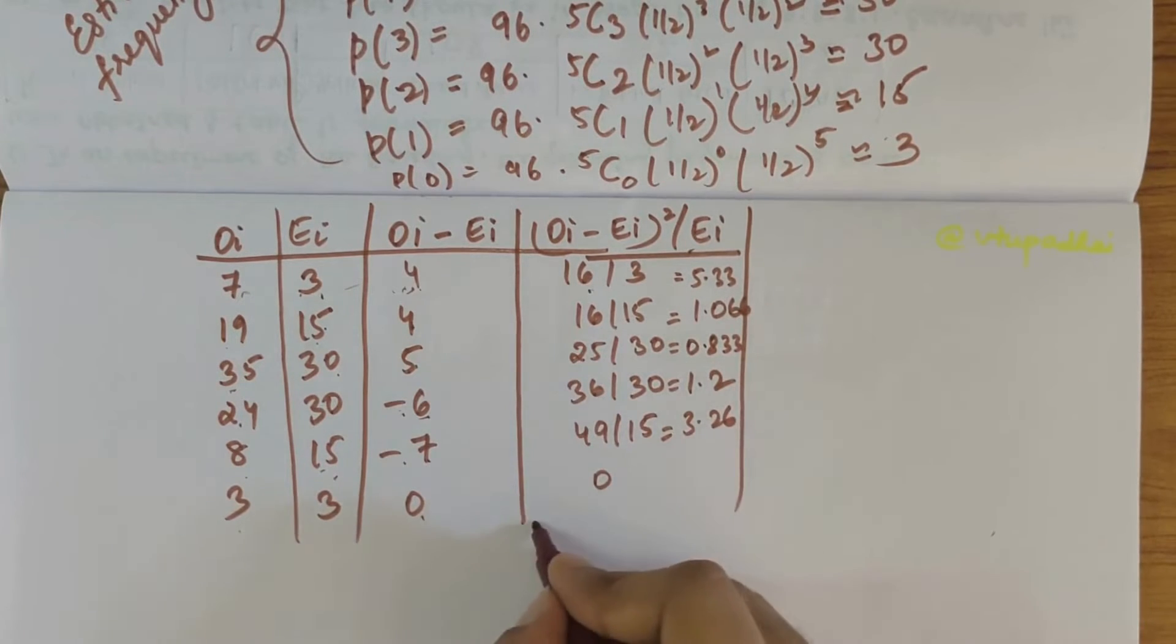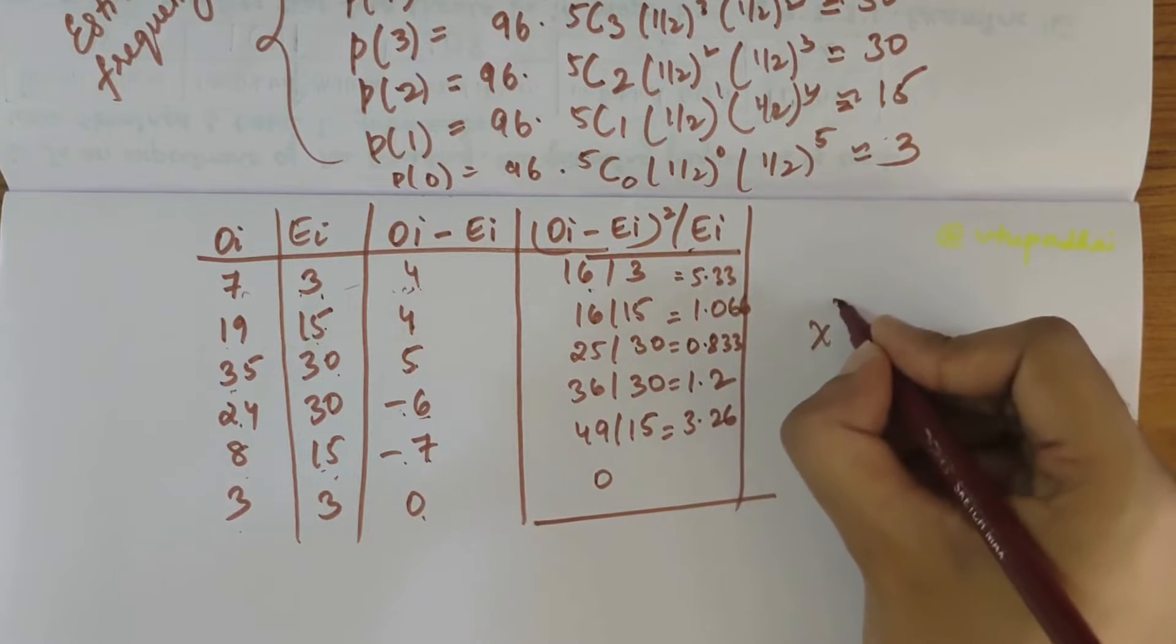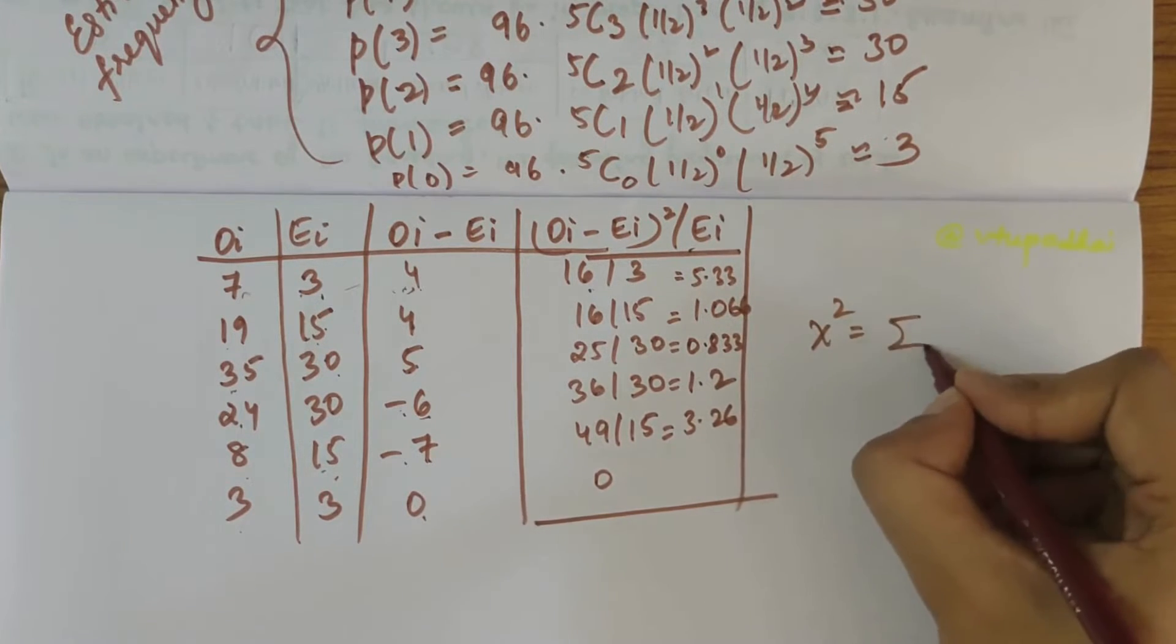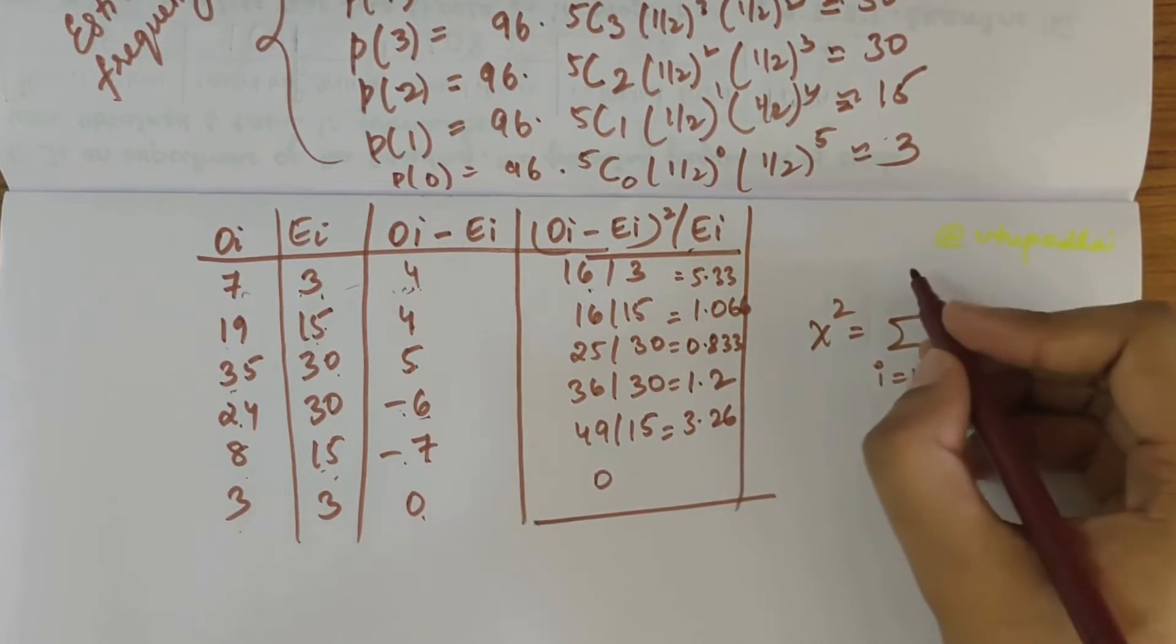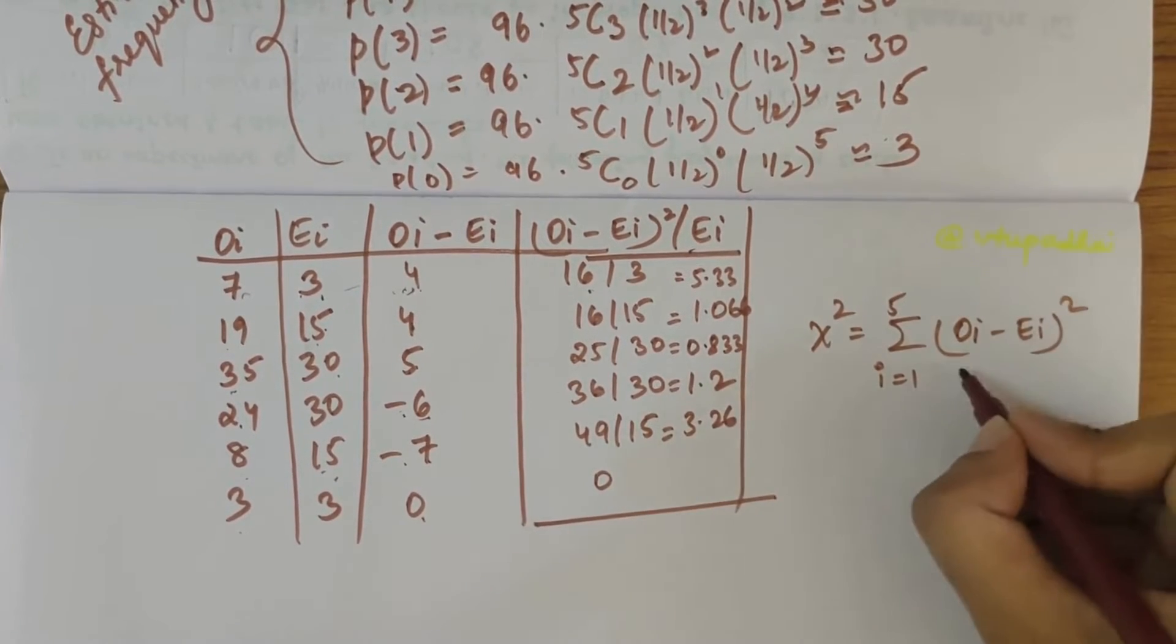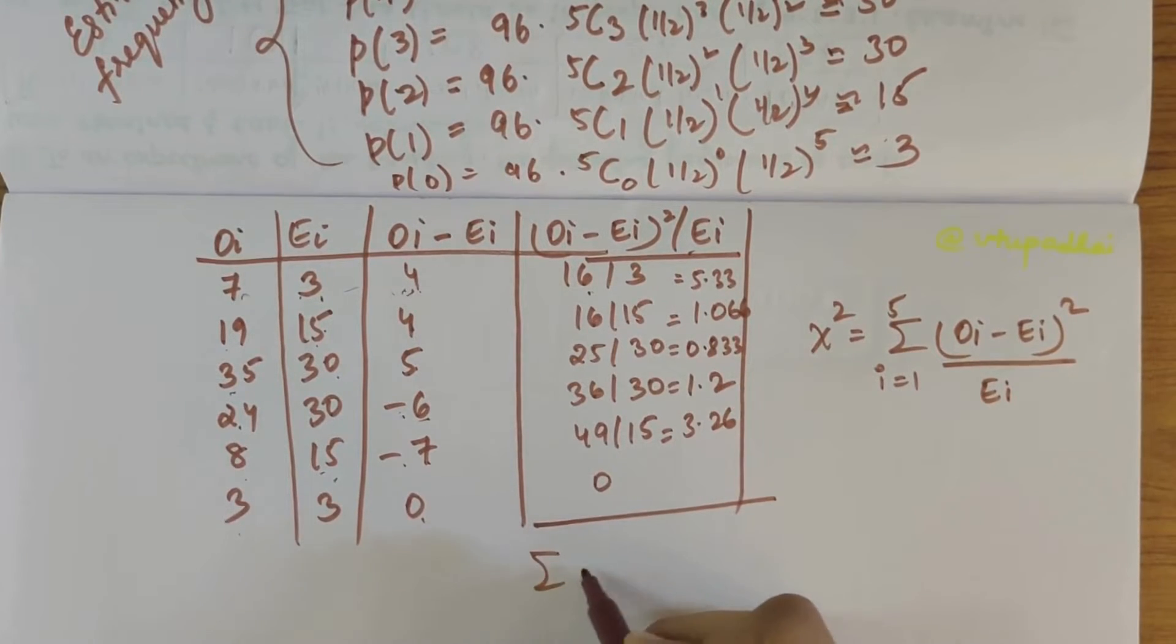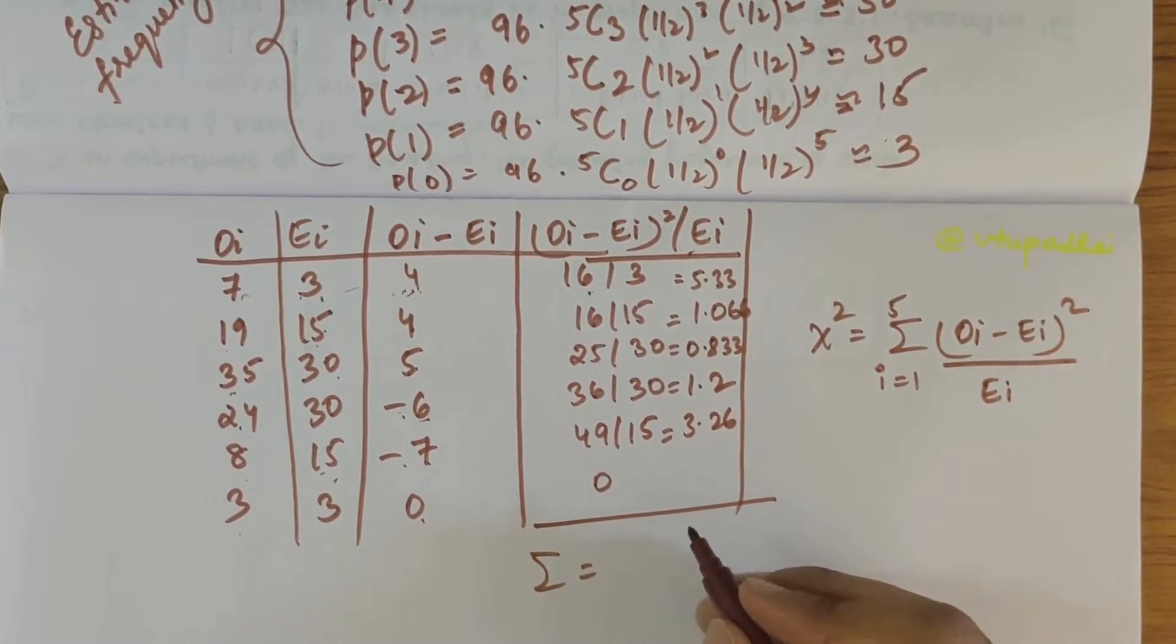Writing the formula: chi-square equals summation i equals 1 to n, where n value is 5, of Oi minus Ei whole square by Ei. If you find summation of this, the final answer is 11.7.